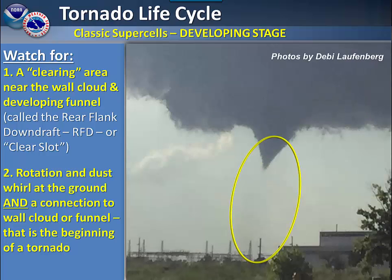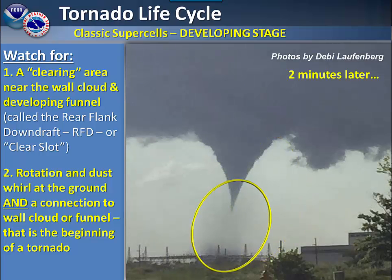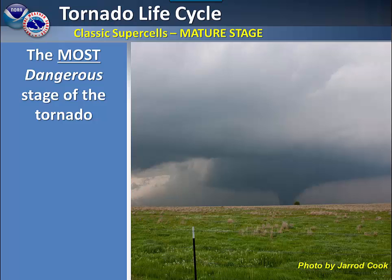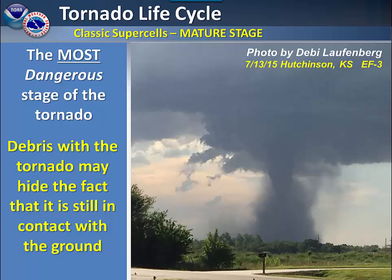Also watch for rotation and dust at the ground and a connection to the wall cloud — that is the beginning of a tornado. In one particular image, the connection isn't quite there yet, but two minutes later you can see the dust being kicked up from the ground. The mature stage of a tornado is the most dangerous stage. The debris that is occurring may hide the fact that it is still in contact with the ground, with debris kicked up quite a ways so you can't really see the point where the tornado is touching the ground.